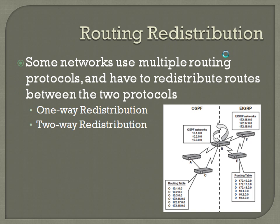For route redistribution — some networks use multiple routing protocols and have to redistribute routes between them. For instance, on a network you might have RIP running for individual sites to advertise routes to the main network, OSPF for different parts of the network, and internal IBGP exchanging most of the routing information. RIP would be fed into BGP so you've got one unit for distributing that throughout the rest of the network. One-way and two-way redistribution sound exactly like they sound — if you're feeding EIGRP into OSPF, that's one-way; if you're feeding OSPF into EIGRP and vice versa, that's two-way redistribution.